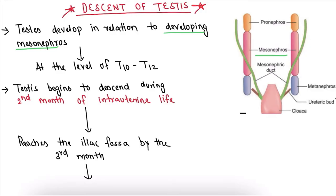I have already made a detailed video about the development of the kidney, you can watch it by clicking on the i-button. Moving on, the testes develops at the level of T10 to T12.